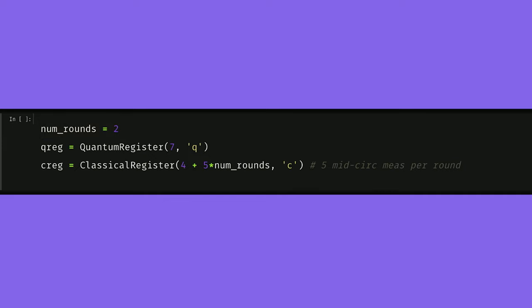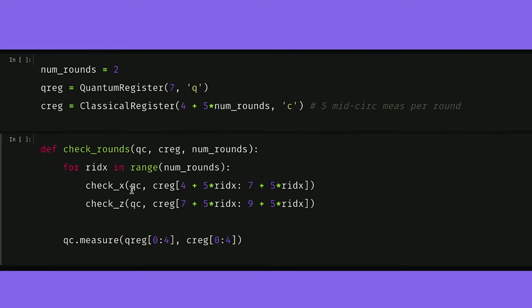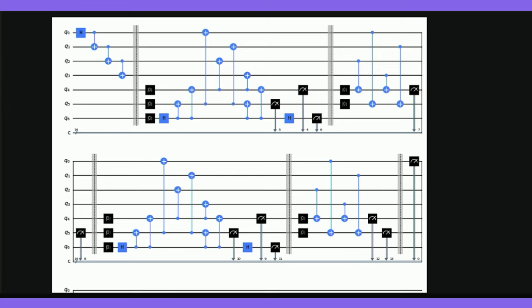Next, we'll construct a method that does the check_x and check_z parities for the number of rounds we choose, and then we measure the remaining qubits at the end. Initializing our code state and then performing the check rounds gives us this circuit. Pretty advanced, eh? In fact, it's so advanced it doesn't fit on this page.